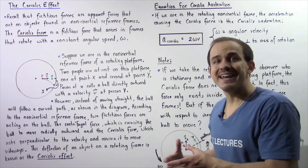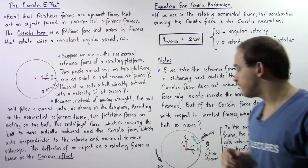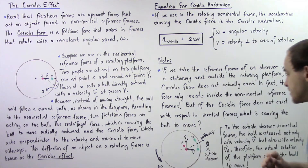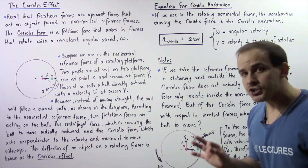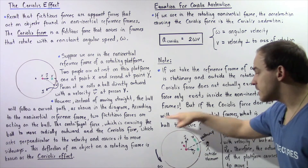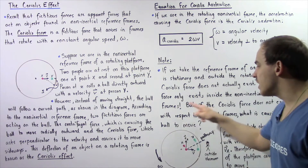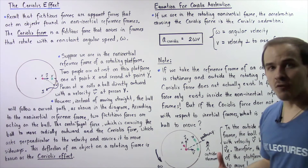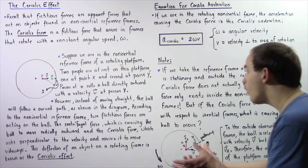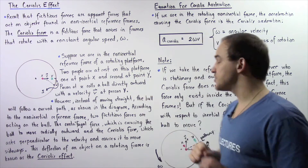What if we're now found in a stationary inertial reference frame and we're observing the rotating platform? Let's suppose we switch frames of reference. Now we're an outside observer who is stationary, found inside an inertial reference frame, observing this rotating platform that is rotating with a constant angular speed omega in a counter-clockwise direction. If we take the reference frame of an observer who is stationary and outside the rotating platform, it turns out the Coriolis force does not actually exist. And that's exactly why we call it a fictitious or false force.